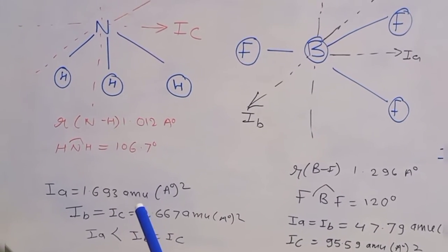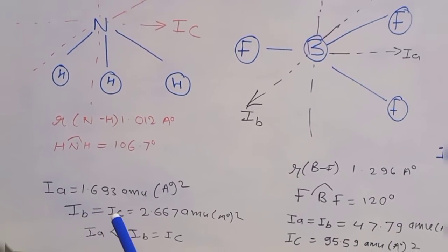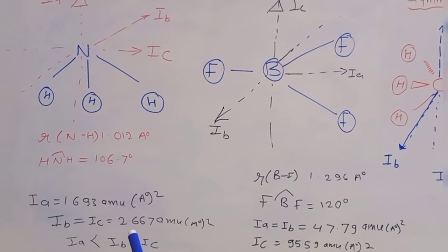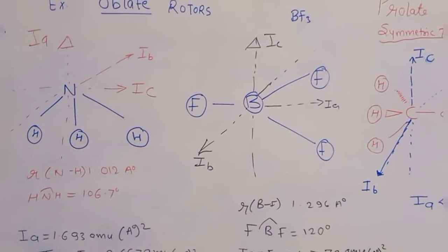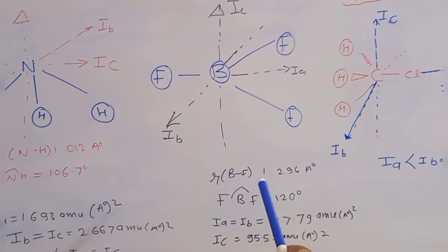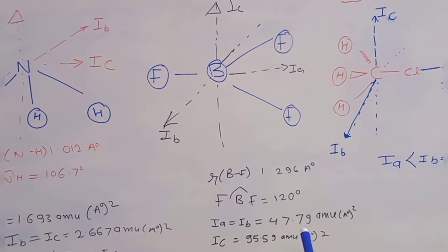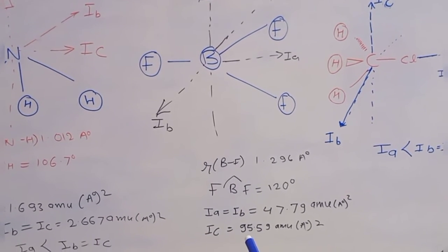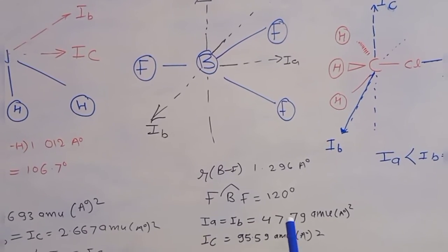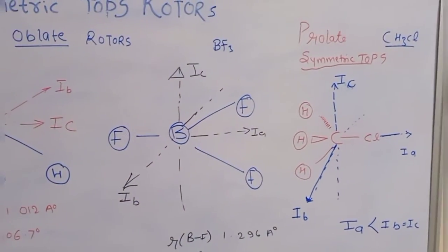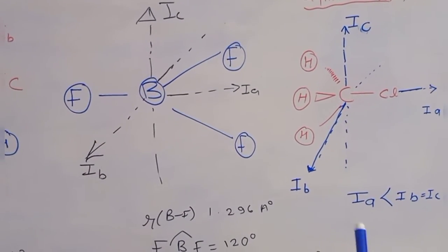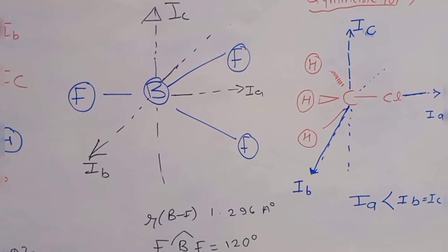For BF3 (bond angle = 120°, r(B–F) = 1.296 Å): Ia = Ib = 47.79 amu·Å² and Ic = 95.59 amu·Å². In oblate rotors, one axis has a higher moment of inertia while the other two are equal. For the prolate example CH3Cl, Ia is smaller and Ib = Ic, consistent with the prolate condition.